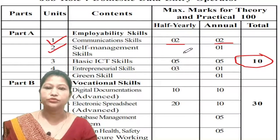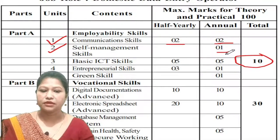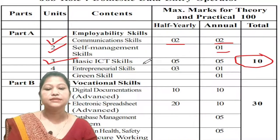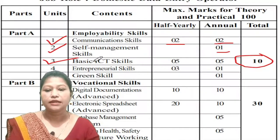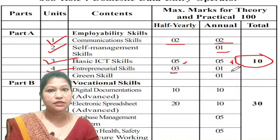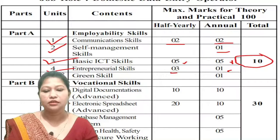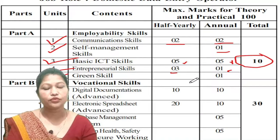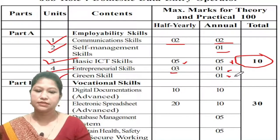For Self-Management Skills, you will have a question in the half-year exam. Then for the annual exam, you will have Basic ICT Skills — that is 5 marks for the half-year and 5 marks for the annual exam. Entrepreneurship Skills: 3 marks for the half-year and only 1 mark for the annual exam. The Green Skills unit does not appear in the half-year exam and carries only 1 mark for the HSLC exam.